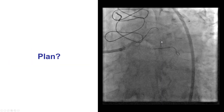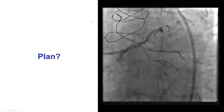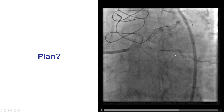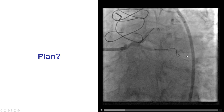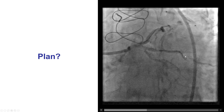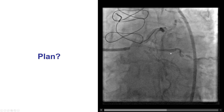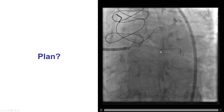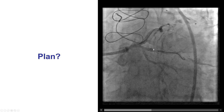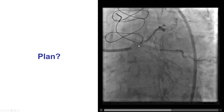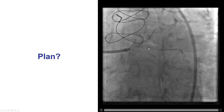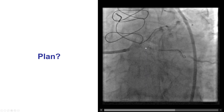What should be the procedural plan here? We know we have previously placed stents. We know we have significant calcification. We know we have another significant lesion in the first obtuse marginal branch. Our plan was to first treat that OM lesion before tackling the bifurcation, then use multiple high-pressure balloon inflations to see if we can expand it, use intravascular imaging, and determine the need for stenting at the end.